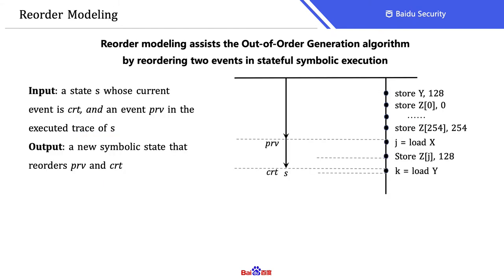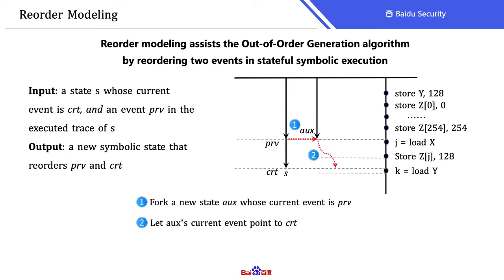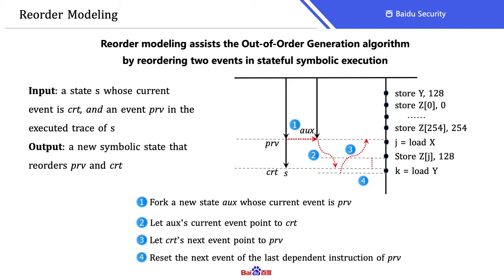The third component is to realize the out-of-order behavior of two given memory events in symbolic execution. Using the motivating example, we want to schedule event load Y right before event load X. We call them CRT and PRV respectively. Generally, we divide the re-order modeling into four steps: first, fork a new state AUX in symbolic execution that is going to execute event PRV; second, redirect AUX to execute CRT first; third, make the next event of CRT point to PRV; and last, reset the next event of the last dependent instruction of PRV to continue symbolic execution after the re-ordering of CRT and PRV.